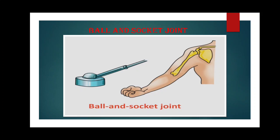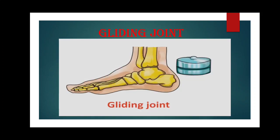The next type of joint is gliding joint. This type of joint is found between the flat surfaces of two bones that are held together by ligaments. The ends of the bones can slide over each other, allowing side to side as well as backward and forward movement. This type of joint is found in your wrists and ankles, along with other joints.